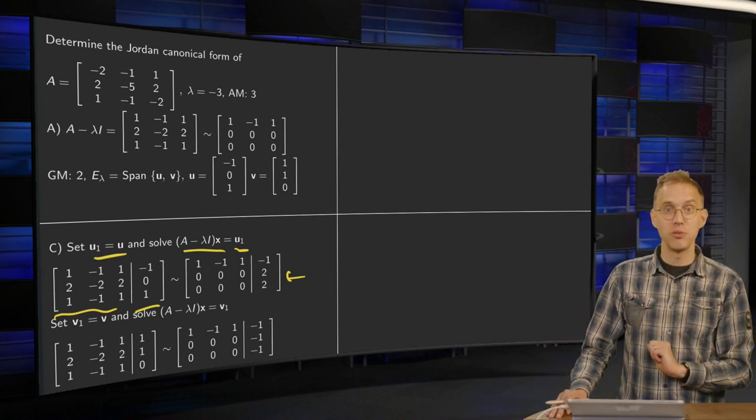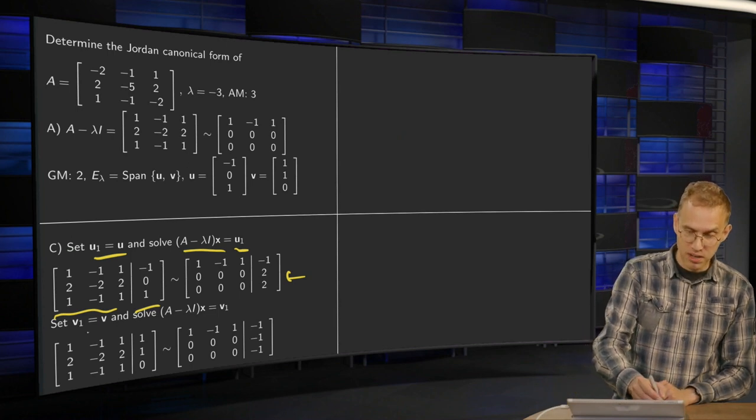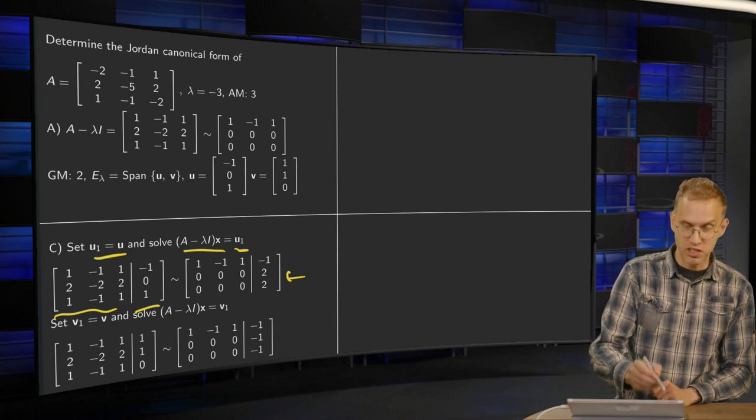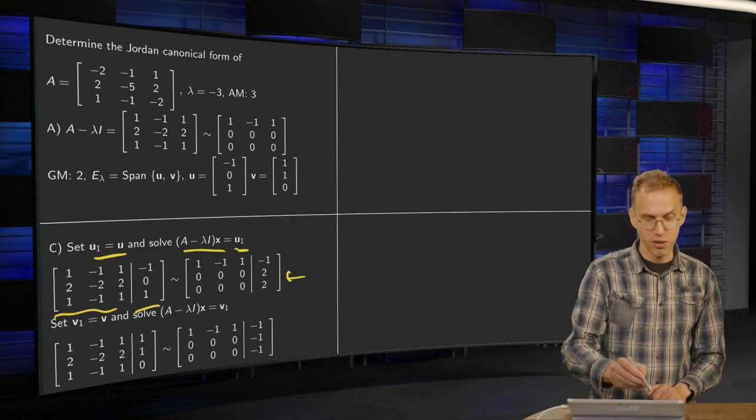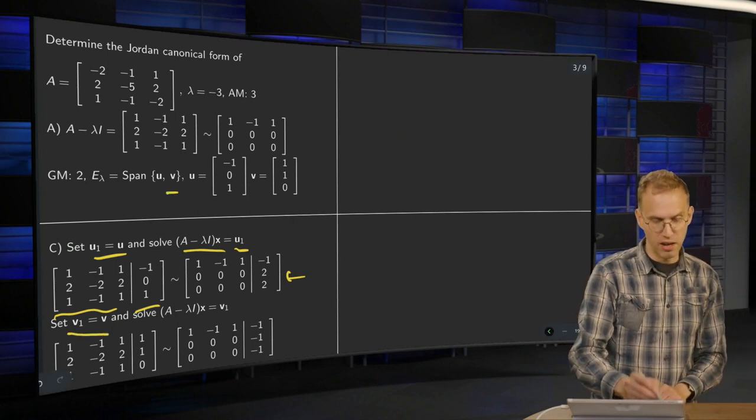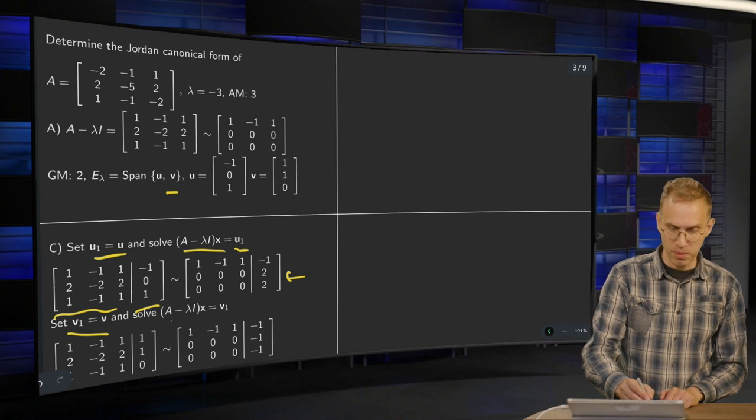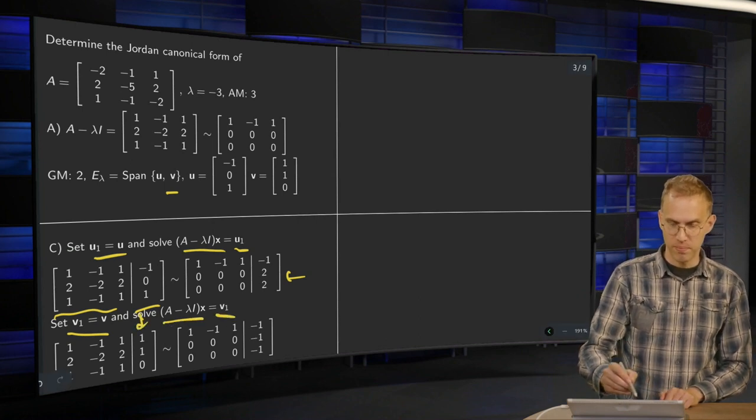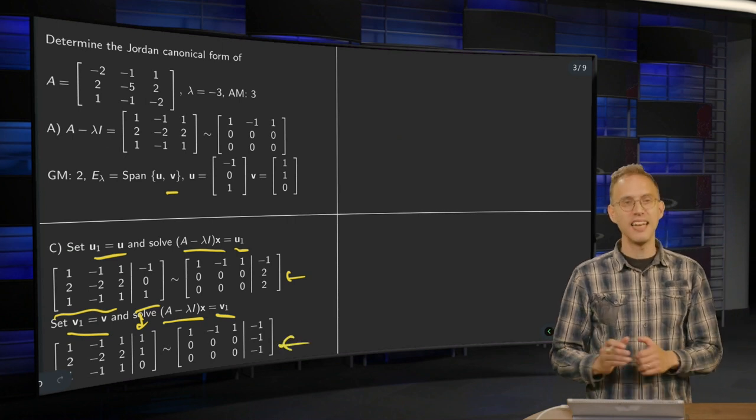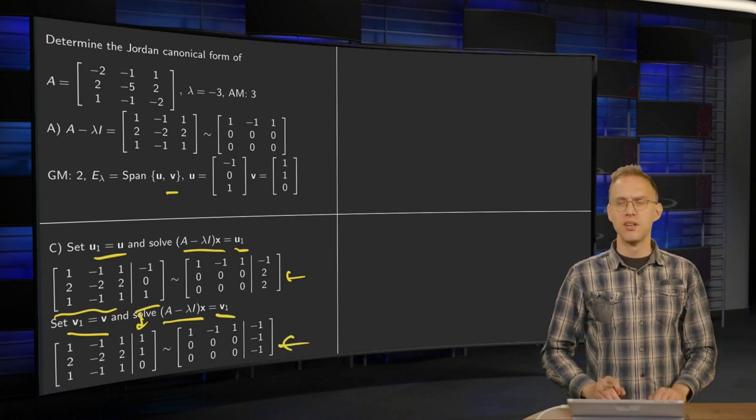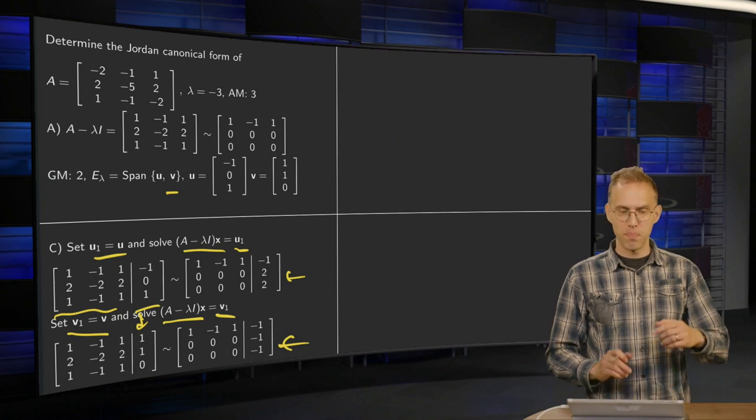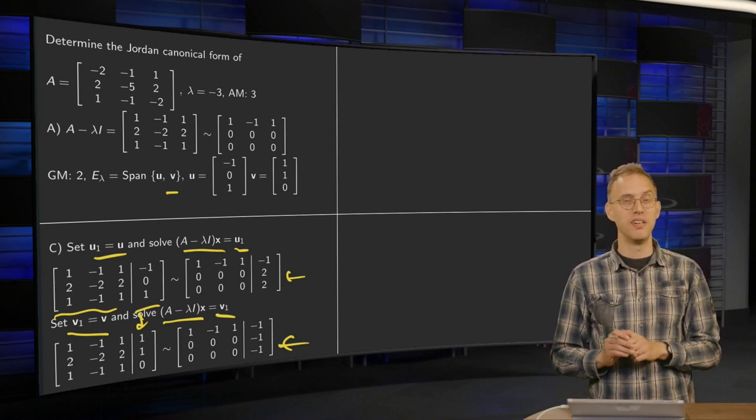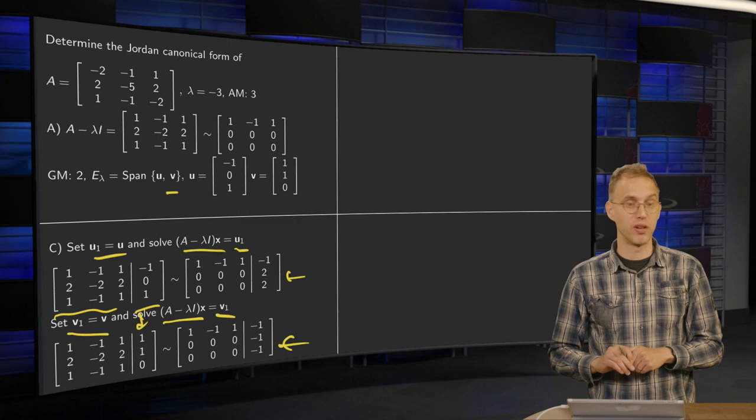But that's not what we want. We haven't gotten another u_2. But we can do something else. Maybe it helps if we put on the right hand side not u, but if we tried with the other one v. So we set now v_1 equals v and solve (A minus lambda I)x equals v_1. I put the v over here. We reduce and again inconsistent. So this doesn't work. So apparently neither u nor v was an endpoint of one of the cycles. So what's going on here?